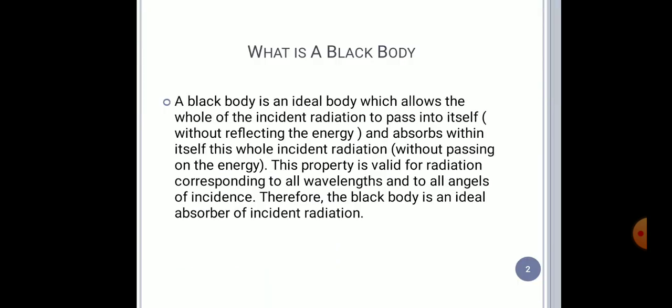What is a black body radiation? Before understanding this, first of all we would like to explain what is a black body. A black body is an ideal body which allows all of the incident radiation which falls on it to pass into itself and absorb within itself. It will absorb all of the radiation and doesn't radiate anything, because this body is black from outside.